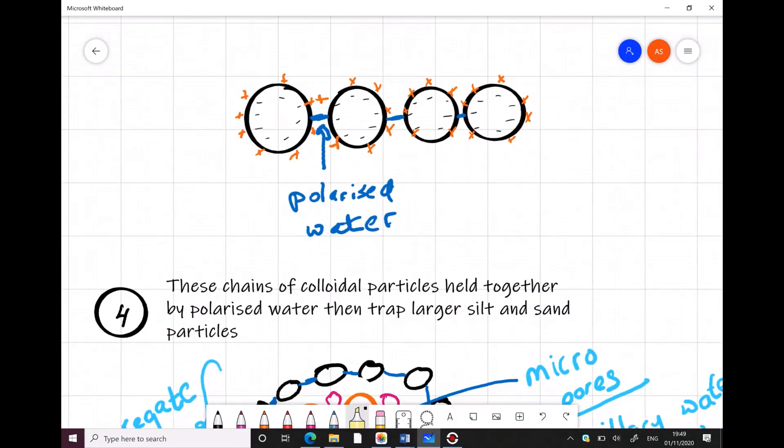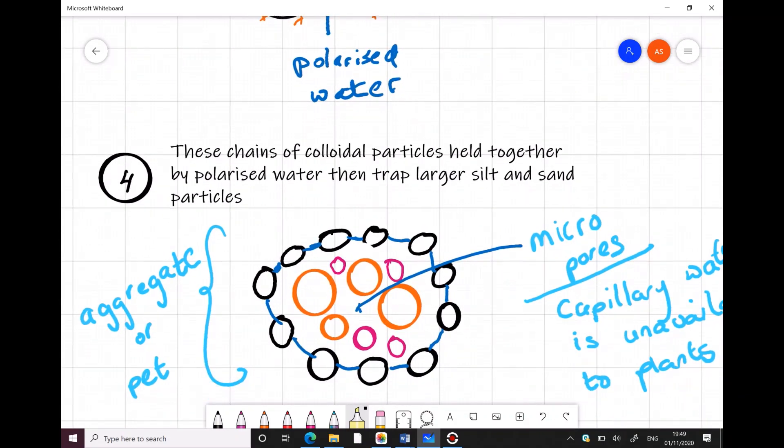Now these floccules then, which are just basically the colloids, their cations and the polarised water, are big enough to trap sand particles, as you see here in orange, and silt particles, as you can see here in clay. And this is what is known as an aggregate or a ped. I have it as pet, but it's known as a ped. I'll just change that. As a ped.